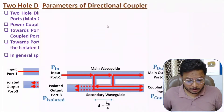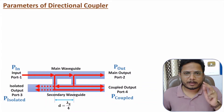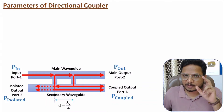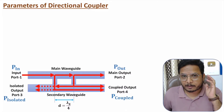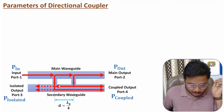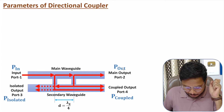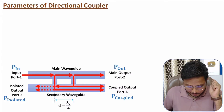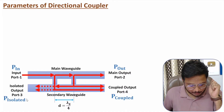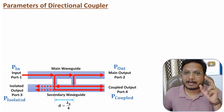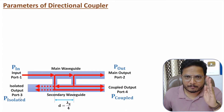Now I will explain the parameters of the directional coupler. To understand these parameters, first you need to understand the naming of power at each port. We apply P-in at the input port, P-out is the power at the main output, P-coupled is the power at the coupled output port, and P-isolated is the power at the isolated port. Ideally, P-isolated should be zero, though practically some power will appear there.